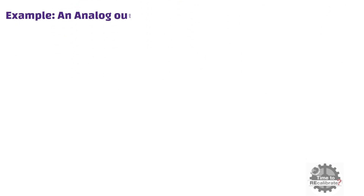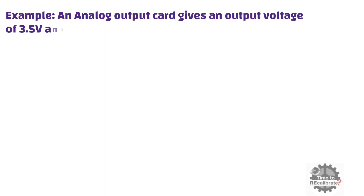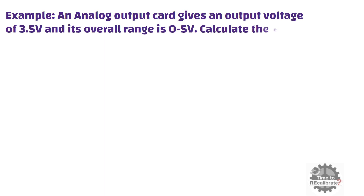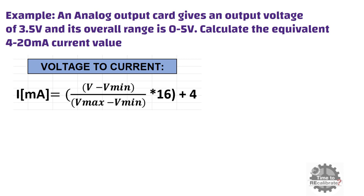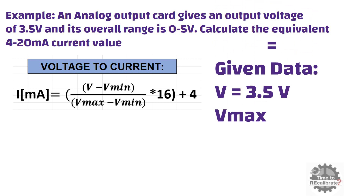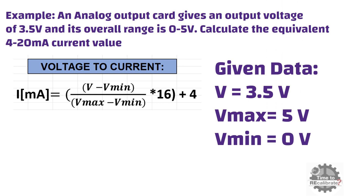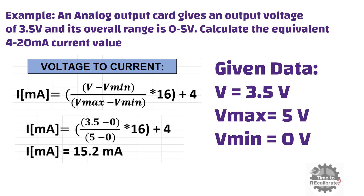For example, an analog output card gives an output voltage of 3.5 volts, and its overall range is 0 to 5 volts. Calculate the equivalent 4 to 20 milliampere current value. The given data is: V = 3.5 volts, Vmax = 5 volts, and Vmin = 0 volts. Putting all these values into the equation and doing the math, you will get 15.2 milliamperes. In other words, when voltage is 3.5 volts, the current value is 15.2 milliamperes.